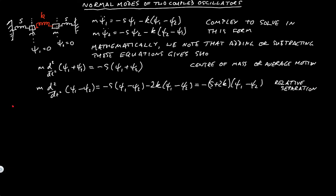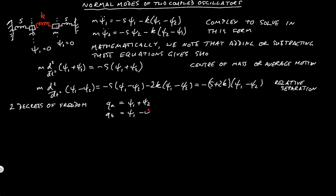In this system we have two degrees of freedom. The free variables are the positions of the oscillators, and because there are two oscillators each oscillating in one dimension, you end up with two variables. As I've shown, we can use variables that give us the average position and the relative separation. So we define Qa = psi 1 + psi 2 and Qb = psi 1 minus psi 2. We could divide each by two, or in more complex versions of normal modes, people introduce a factor of the square root of the mass to make the later maths easier.